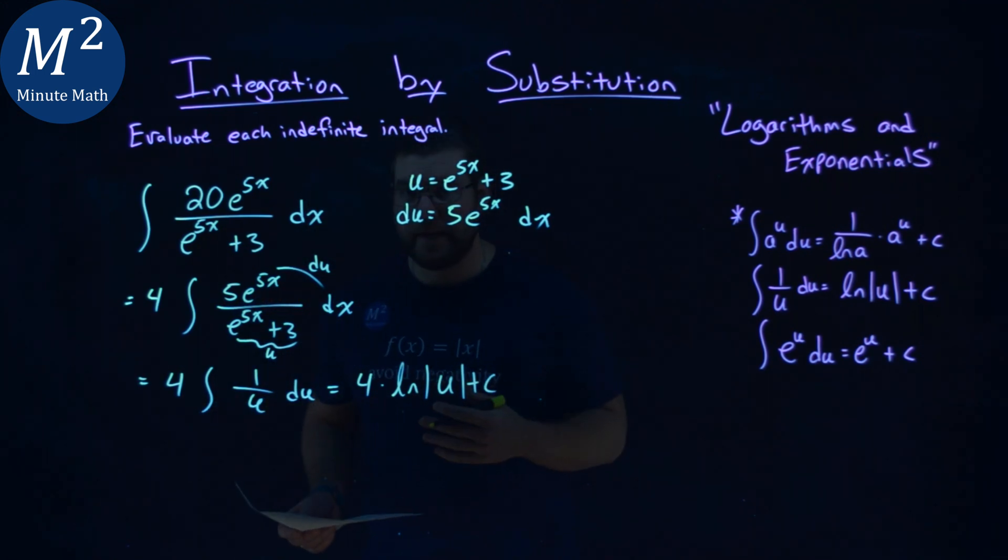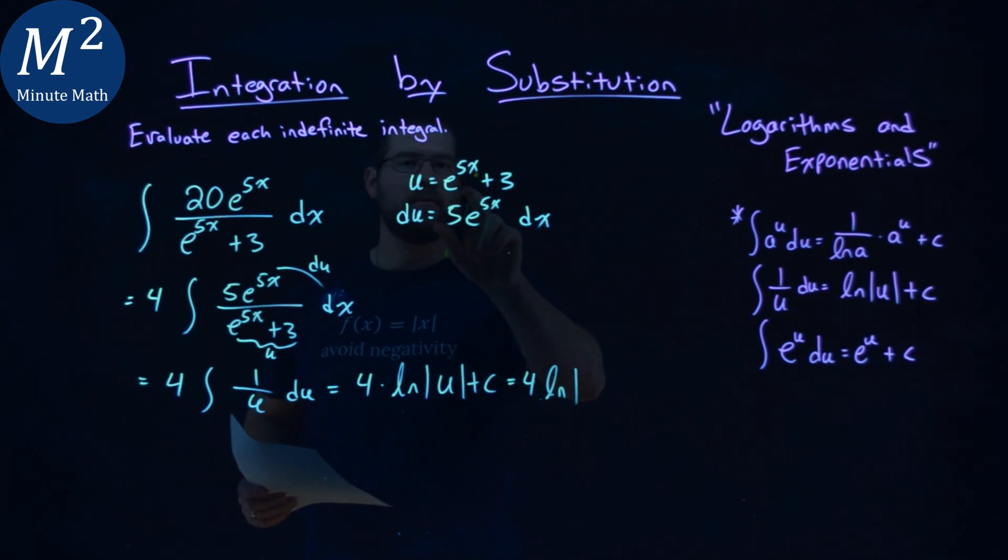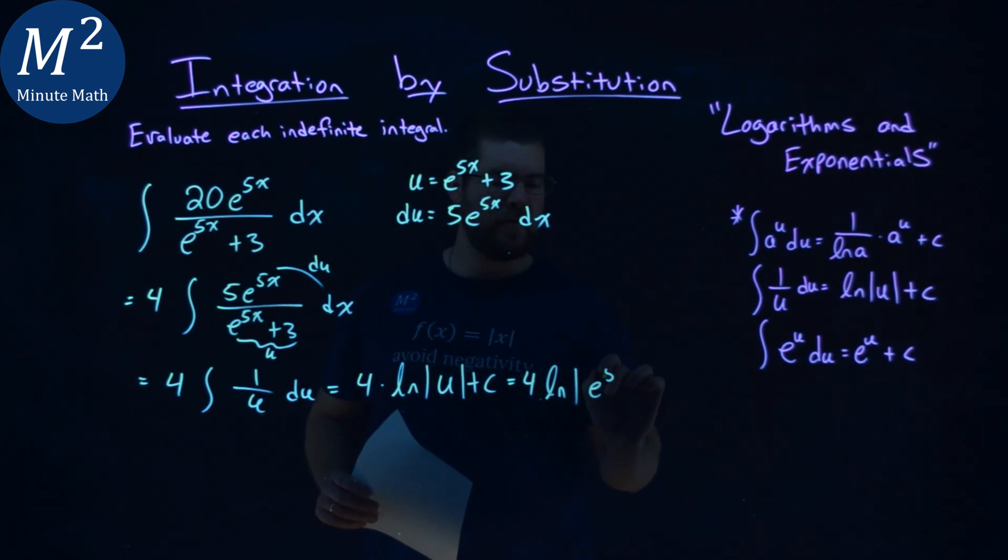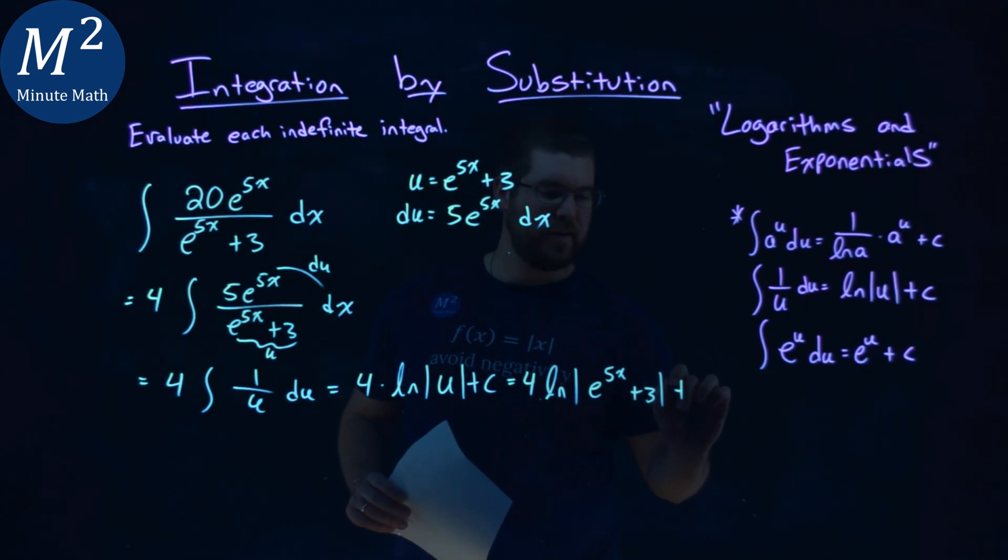And now we just have to plug u back in. So 4 stays out there, natural log, absolute value, our u value from the beginning, e to the 5x plus 3 down here, then we have, don't forget it, the plus c.